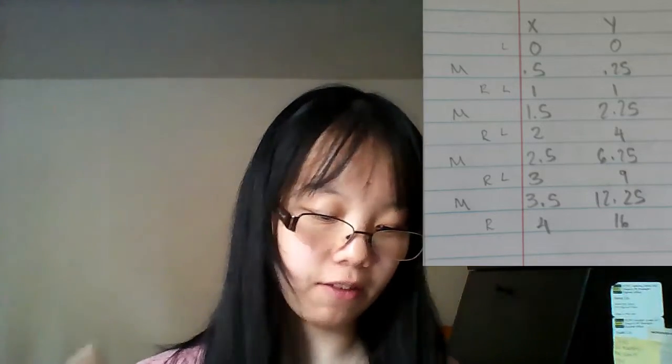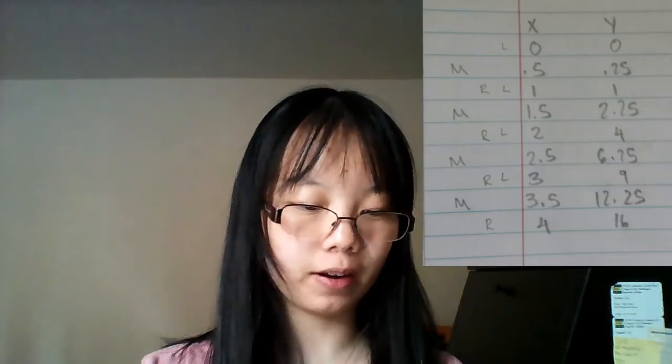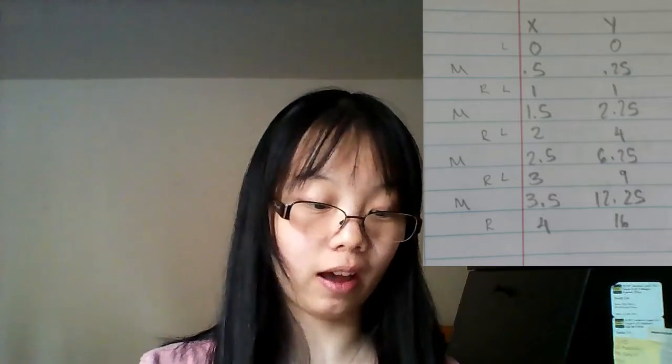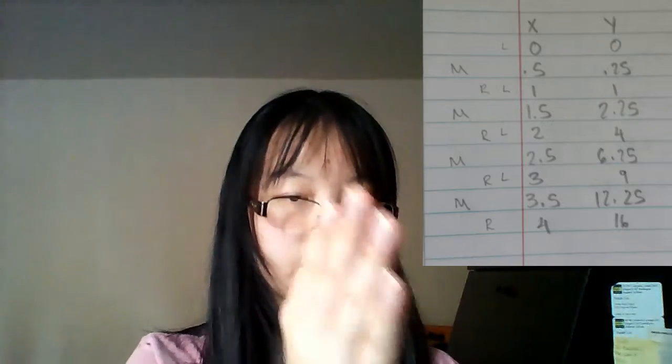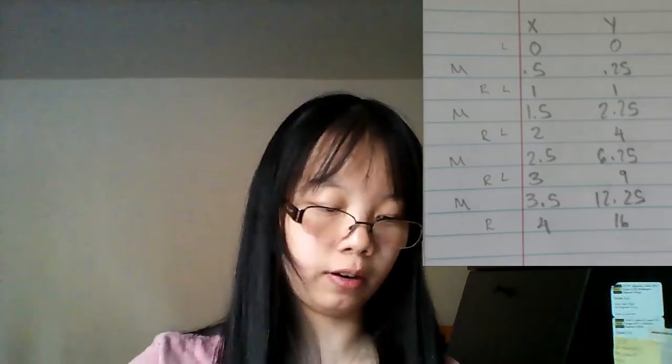So, after you've drawn down your table, it should look like this, which I'll be showing on the screen. As you can see, for x, I have 0.5, 1, 1.5, 2, 2.5, 3, 3.5, 4. And then the y is shown on the side. And as you can see, on the left side of x, I have L, M, L, R, L, M, R, L, M, R. And you can see they're in a column together, in their own columns.